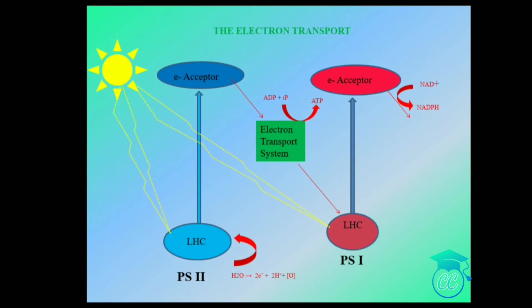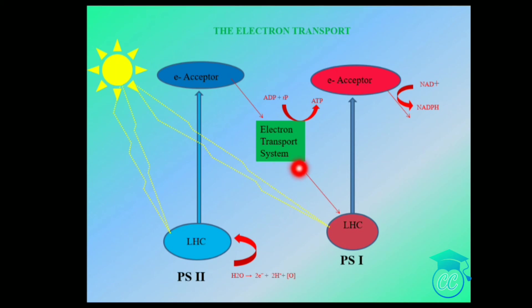In electron transport, both Photosystem II and Photosystem I work in a series. In PS2, the reaction center chlorophyll a absorbs 680 nm light, electrons get excited and are picked up by a primary acceptor, then transferred to an electron transport system consisting of cytochromes, and then passed to PS1. In PS1, chlorophyll a absorbs 700 nm light and the electrons get excited again.